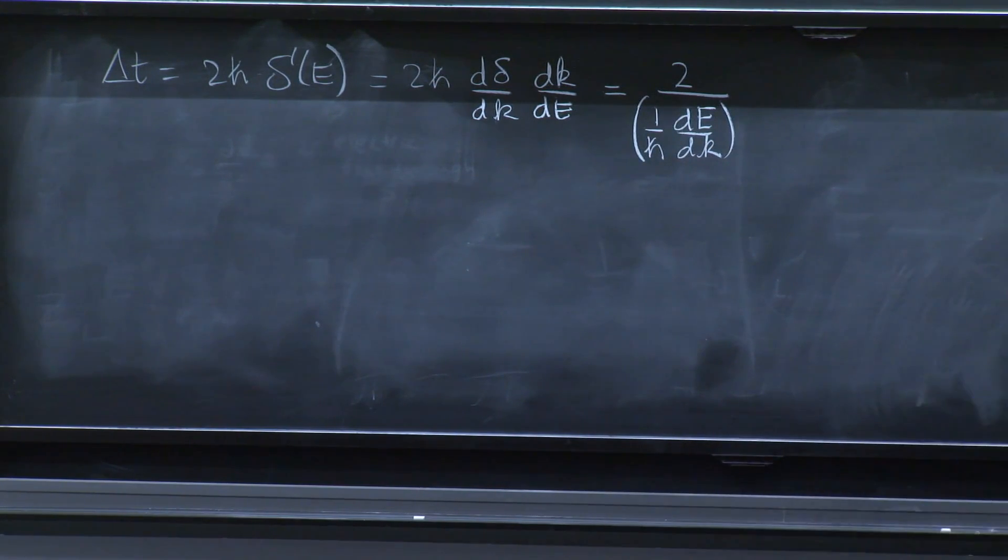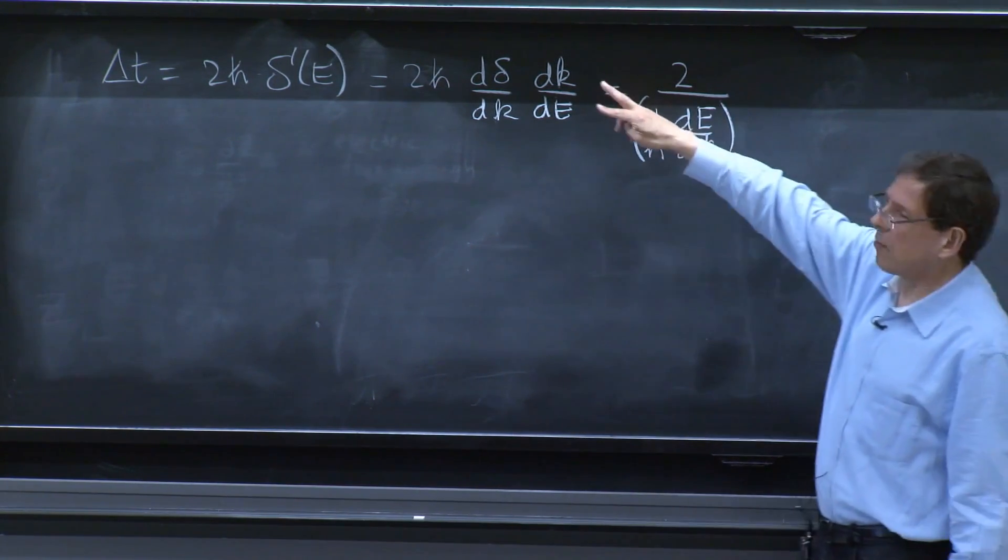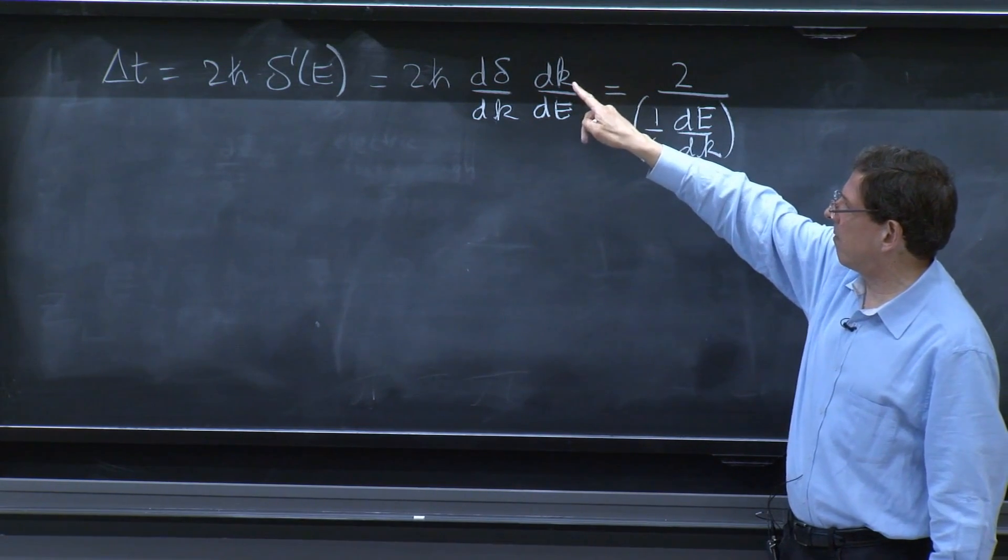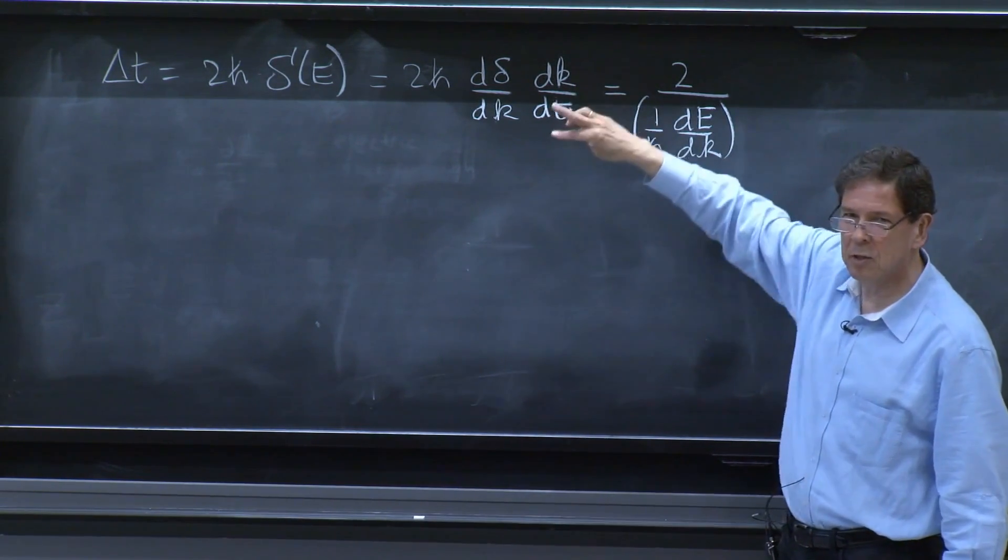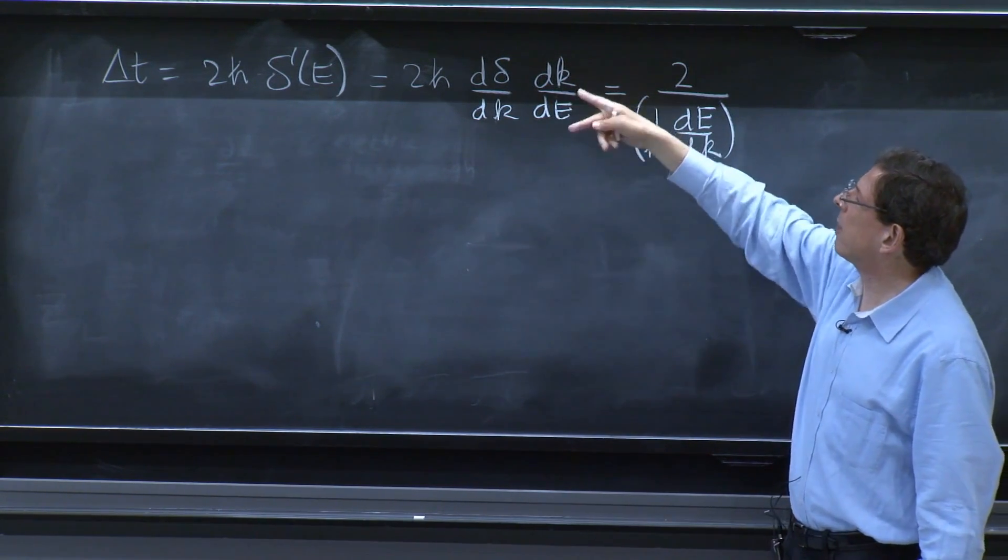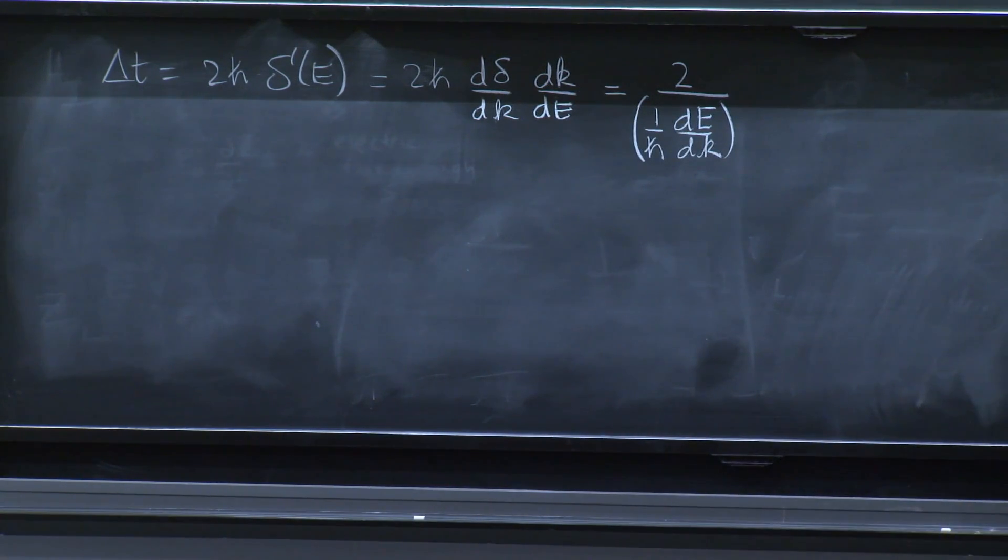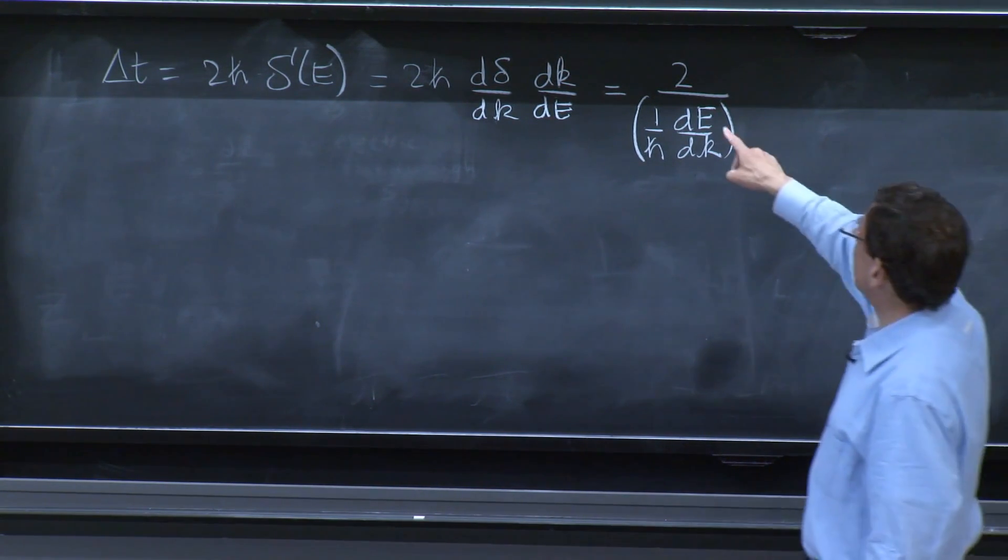I do a little rearrangement. This derivative is one function of one variable. k and e, there's a single relation. So you can just invert it. It's more dangerous when you have partial derivatives. It's not necessarily true. But for this ordinary derivative, it's true.